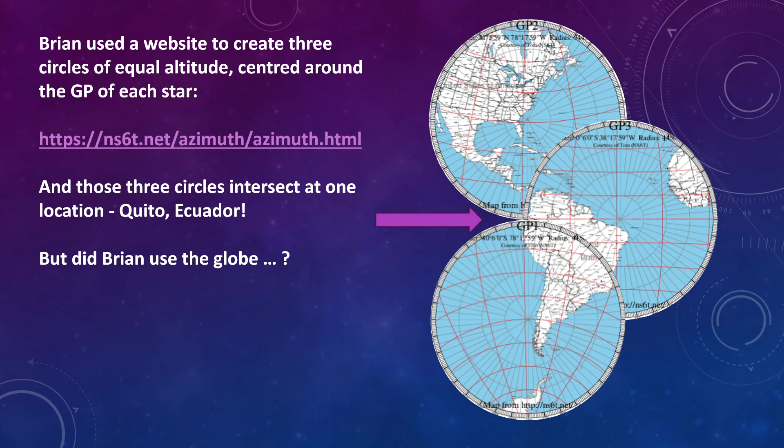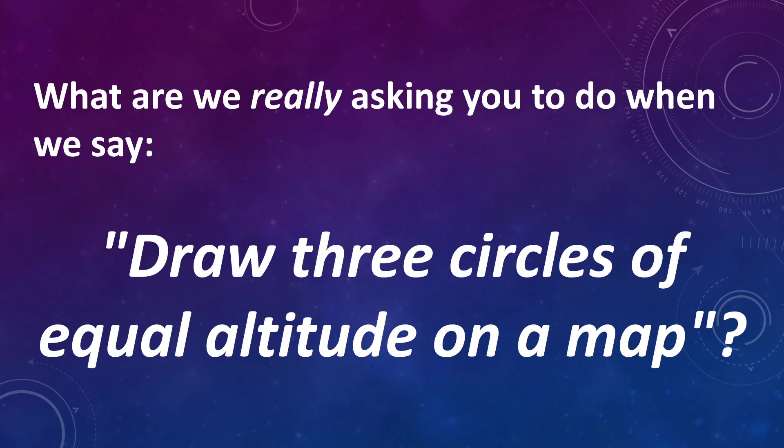But the big question is did Brian use the globe? And to answer that you actually need to understand what we're really asking you to do when we say draw three circles of equal altitude on a map.